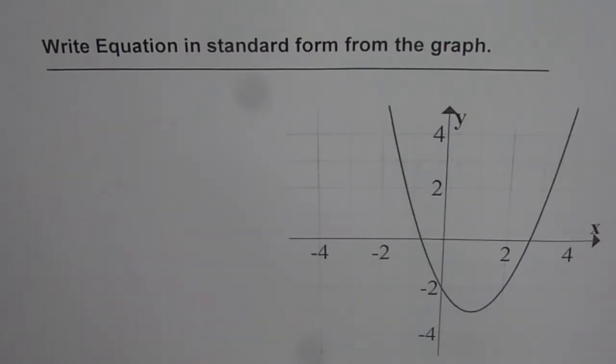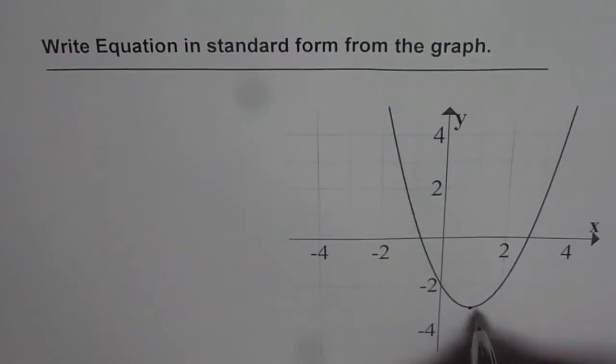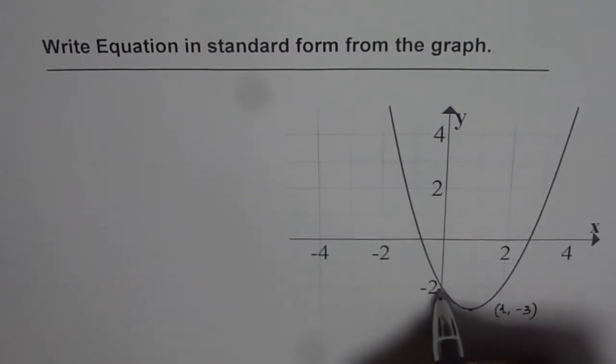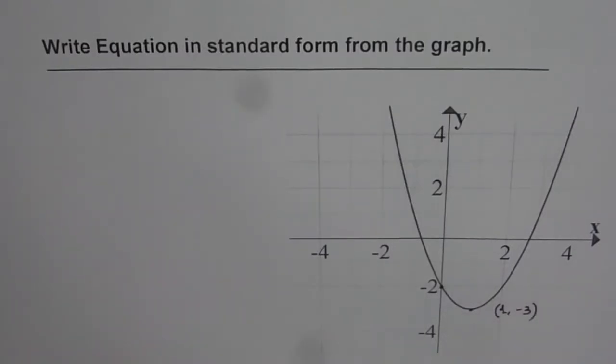So we have a parabola here which has vertex at (1, -3) and we have y-intercept at -2. Using these two points, I'd like you to write down the equation of this parabola in standard form.